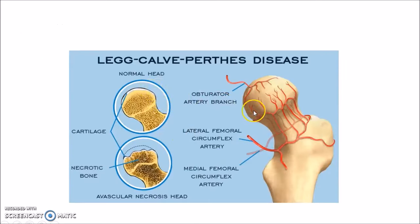This picture shows the blood supply of the head and neck of femur. This picture shows the difference between a normal head of femur and Perthes disease. As you can see, in Perthes disease there will be necrotic bone due to avascular necrosis of the head of femur and the head will be deformed.